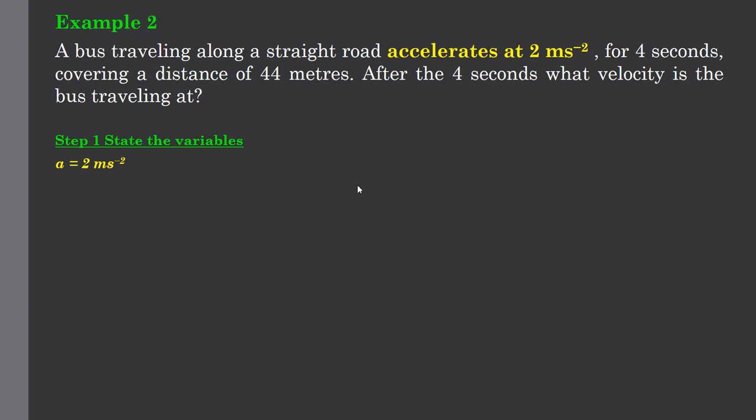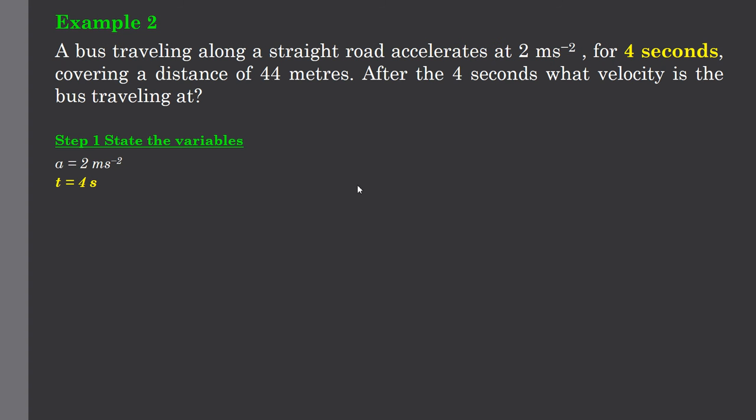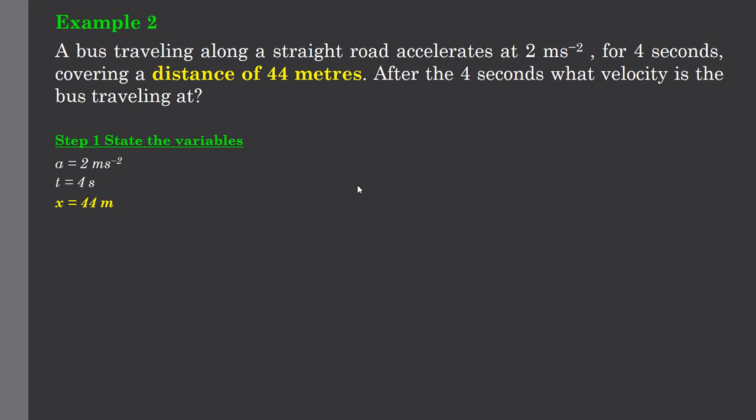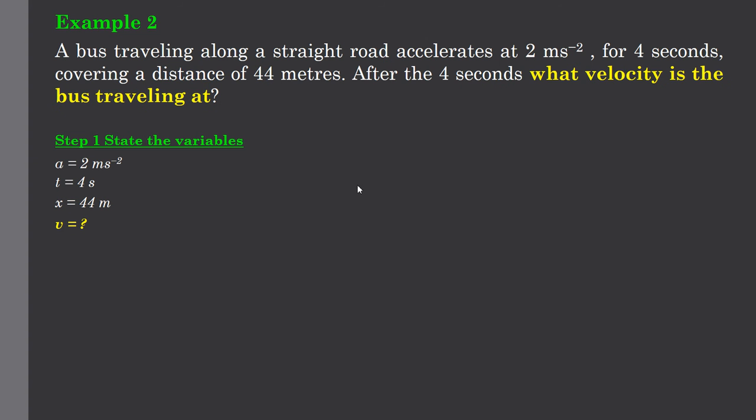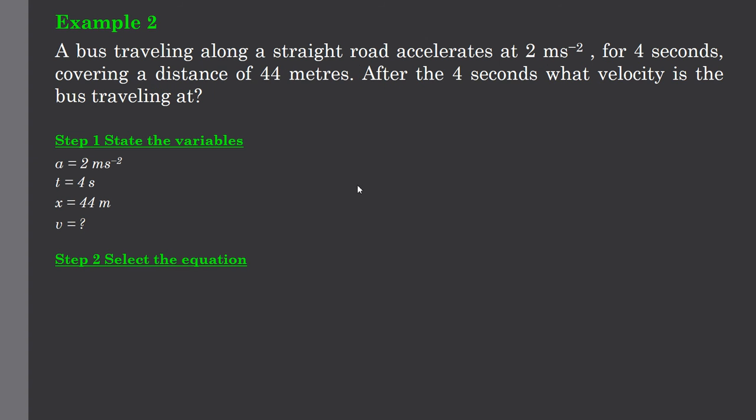So the variables first of all. Well the first one we have is an acceleration of 2 meters per second per second. So that's a. t is 4 seconds, that's the time. x is 44 meters, that's our distance or displacement. And v is the final velocity. We want to know what is the velocity at the end of this 4 second period. We now need to select an equation. Again, only one has an a, t, x and v.